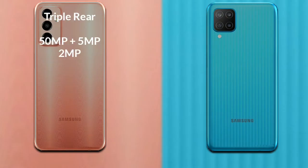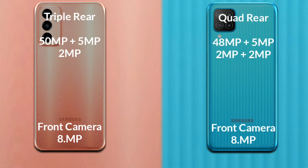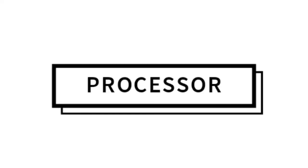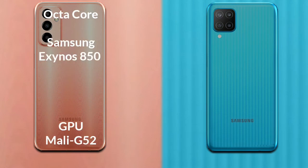Comparing the cameras: Samsung Galaxy M13 has a rear triple camera setup — the primary camera is 50 megapixels, the secondary sensor is 5 megapixels, and the third sensor is 2 megapixels. Its front camera is 8 megapixels. Samsung Galaxy M12 has a rear quad camera setup — the primary camera is 48 megapixels, secondary sensor 5 megapixels, third sensor 2 megapixels, and fourth sensor 2 megapixels. Its front camera is 8 megapixels.